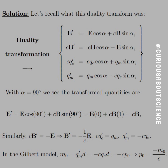Here we want alpha equal to 90 degrees. We see the transform quantities: E-prime is equal to E cosine 90 plus cB sine 90. Cosine of 90 degrees goes to 0 and sine goes to 1, so E-prime is actually cB. Similarly, cB-prime is equal to negative E, so B-prime is equal to negative 1 over C times E.